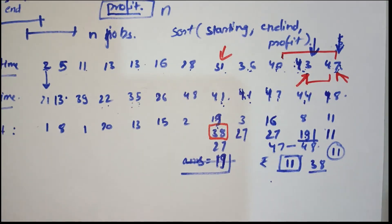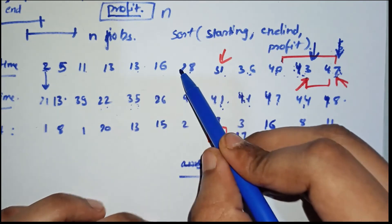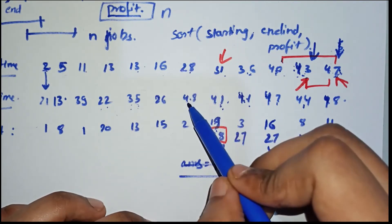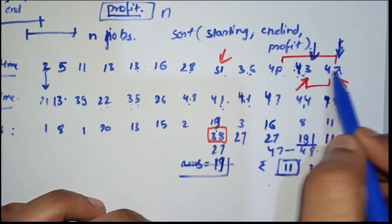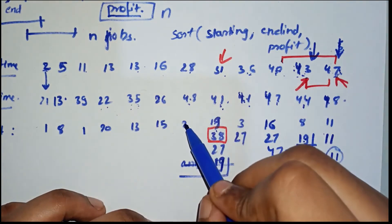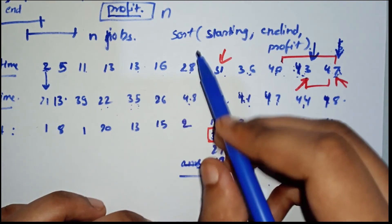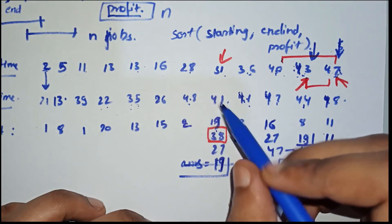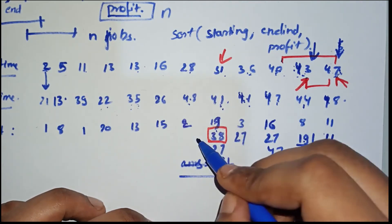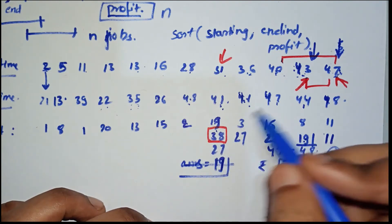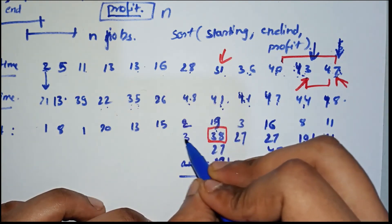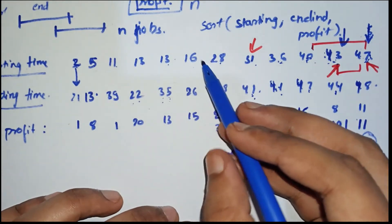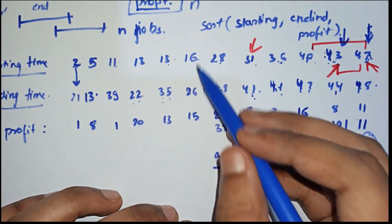Now we have a job from 28 to 48. Lower bound of 48 is nothing, so we can only earn 2 rupees by doing this job. Maximum of 38 and 2 is obviously 38, so here it remains 38.